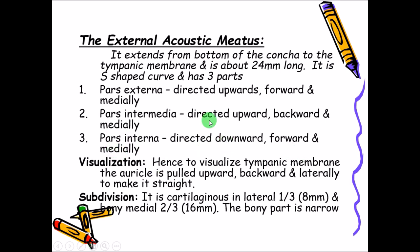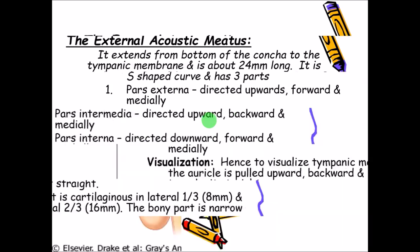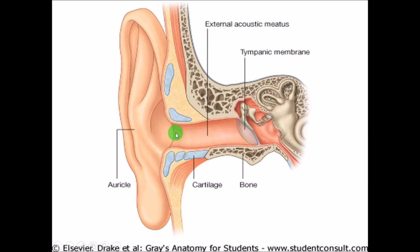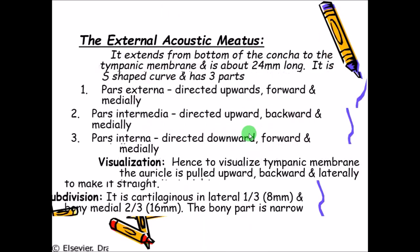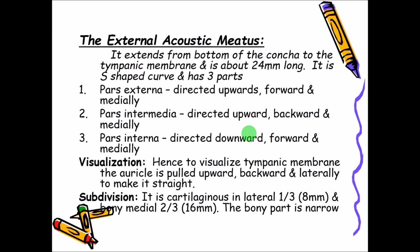This can be appreciated when you put a torch to examine the tympanic membrane — you cannot see directly into the tympanic membrane because it is S-shaped and curved. To visualize the tympanic membrane, you have to pull the pinna upwards, backwards, and laterally to make the tube straight, and then you can see the tympanic membrane. This clearly indicates that it is not a straight tube.